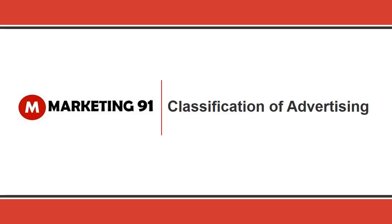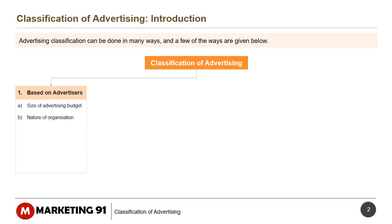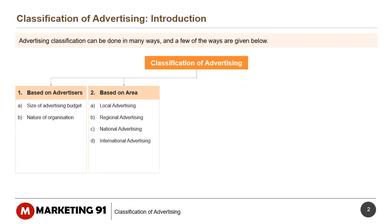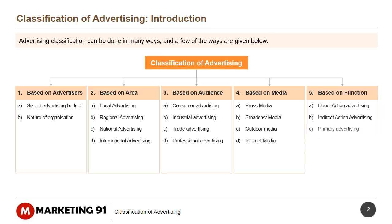Hello and welcome to marketing91.com. Advertising classification can be done in many ways. A few of the ways are: based on Advertisers, based on Area, based on Audience, based on Media, and based on Function. Let's understand each of these classifications in detail.